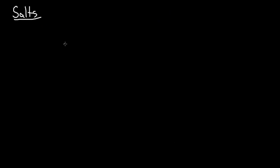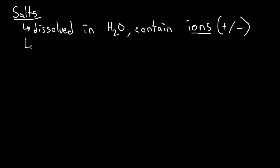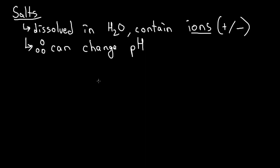Now let's apply all that we just learned to salts. The reason why salts can actually change the pH is because when dissolved in water they form cations and anions. Because these ions will be flowing in water, they're going to have an effect on the water and therefore can change the pH. The exam asks us to predict what the pH will be if a salt is dropped into water, and there are several scenarios we'll deal with.